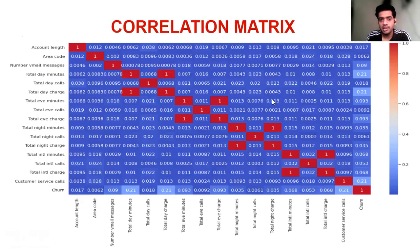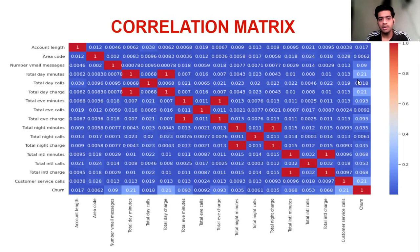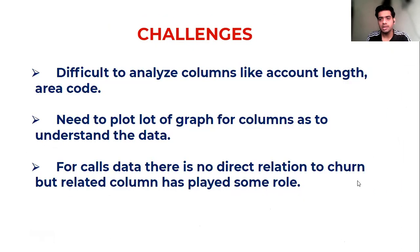The correlation matrix allows us to see the relationship between each variable and churn. The variables that most affect churn are: total day minutes, total day charges, and customer service calls. These are the key areas we need to work on, as they are the most influential factors driving customer churn.